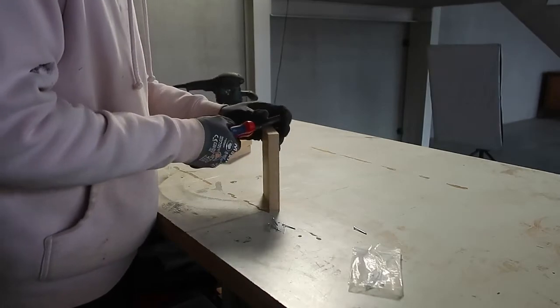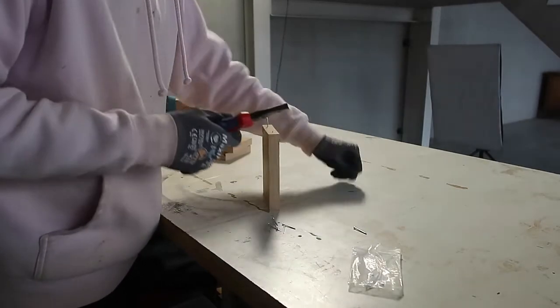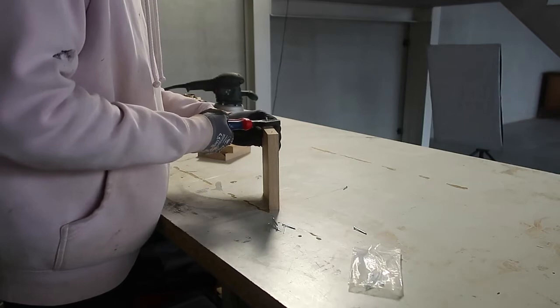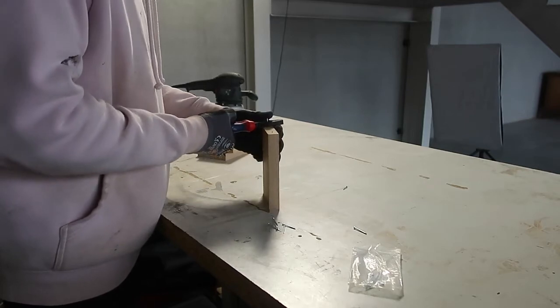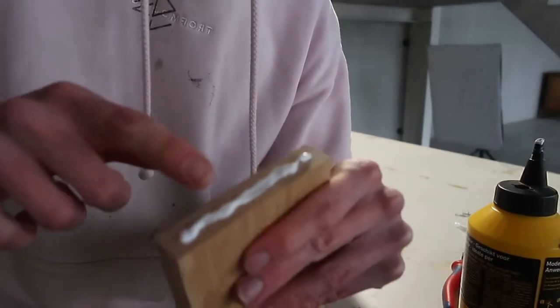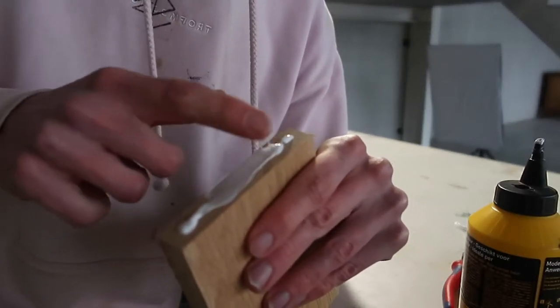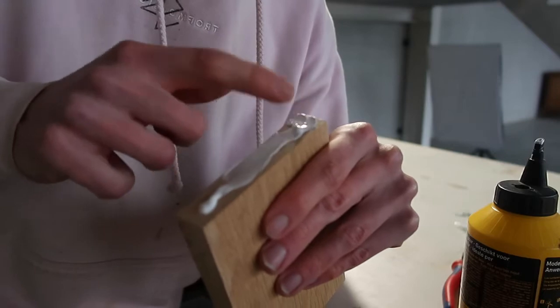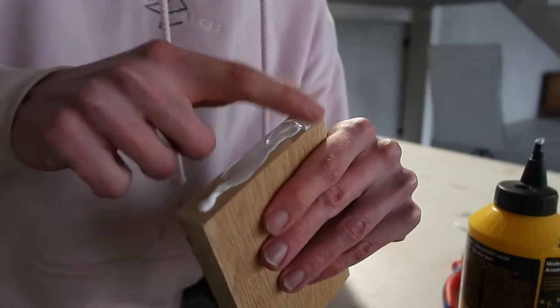A little trick I got from Paul Sellers was to use two nails and cut off the heads so you have a little bit sticking out. When you put on the glue and you're clamping up your project, the nails will prevent the piece from sliding around.